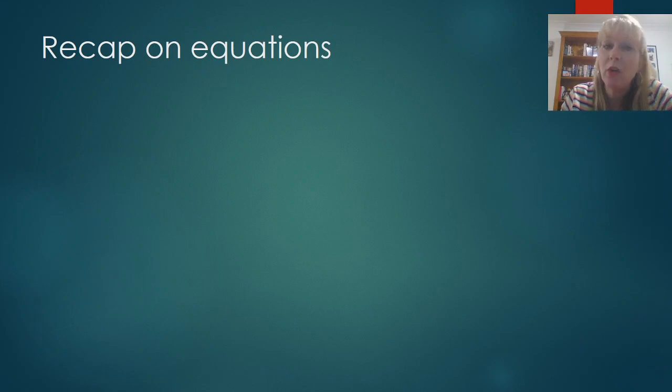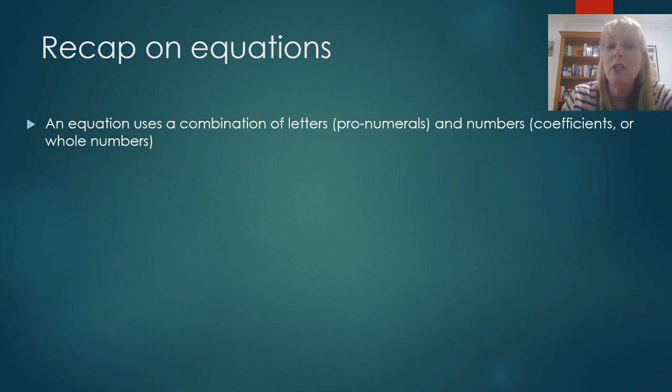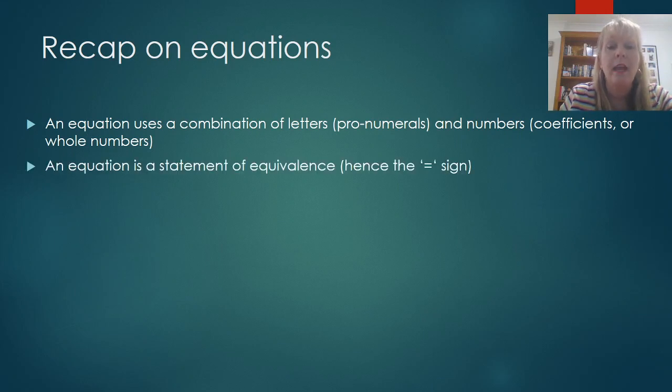So let's have a bit of a recap on equations. An equation uses a combination of letters, which are pronumerals, and numbers, which are coefficients or could be whole numbers. An equation is a statement of equivalence. That's why we have an equal sign. Some examples of equations are x equals 3, which has one variable, but we know it is what it is worth. Y plus 2 equals 3 take away y. And we would need to change that formula around in order to find the value of y. And also a third equation could also be 3x plus 2y equals 6, and that has two variables.